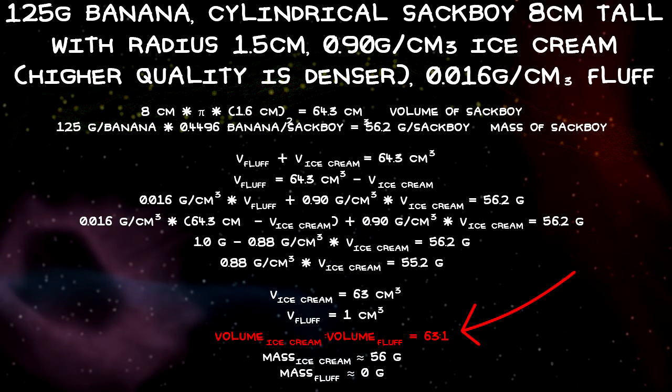You can see the numbers I used in the math here. I treated Sackboy as a cylinder and took his height from the LittleBigPlanet wikia, though this number unfortunately has no source behind it. His radius was an estimate. I got the density of the fluff by dividing the mass of a package of polyester fiber stuffing on Amazon by its volume. I also assumed the highest quality of ice cream, since there's no way he'd be filled with the cheap stuff.